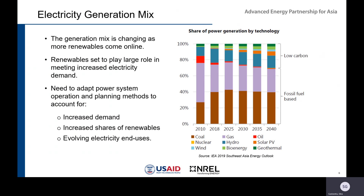The final trend is that there have been changes not only on the demand side but also on the supply side of the power sector. The electricity generation mix is changing as more renewables come online. With wind and solar generation set to play a large role in meeting increased electricity demand, there is a need to adapt power system operation and planning methods to account for the variability of these resources. As shown in the figure to your right, projections of the power generation mix over the next 20 years show that wind, solar and other renewables are projected to meet over a third of electricity demand by 2040, and in some countries in the region it already meets that and is set to meet an even larger percentage.